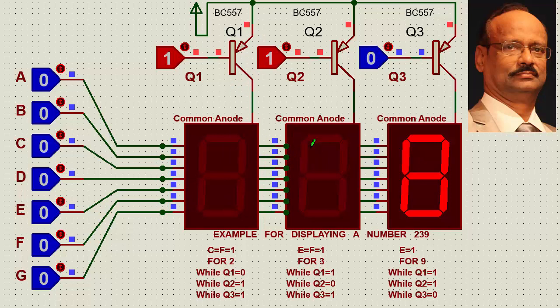If I switch on this, it will be this, this, this. And if I do it at a very high speed, the numbers will look stationary. Now see how it works. Now what I try to do is an example for displaying a number 239. Let's say how a number 239 will be displayed.